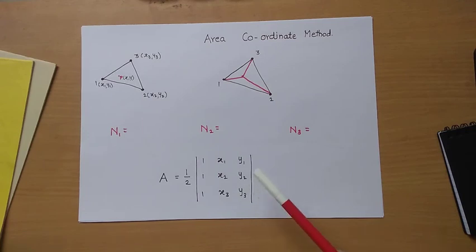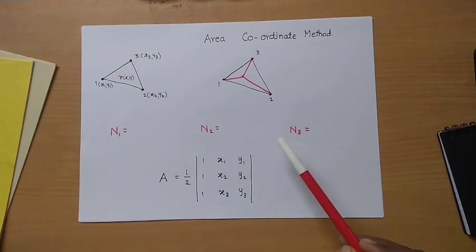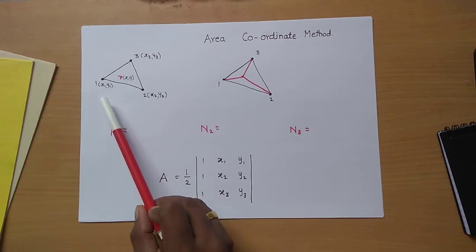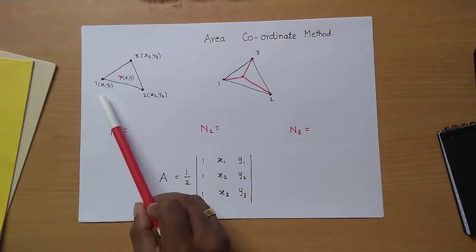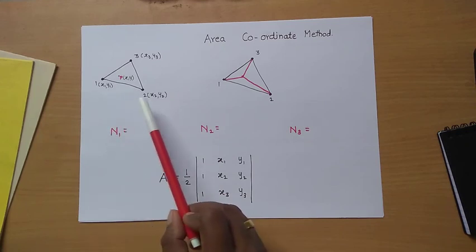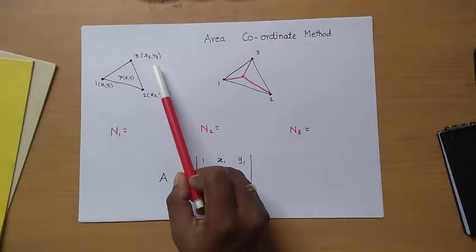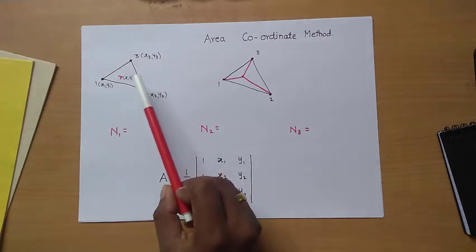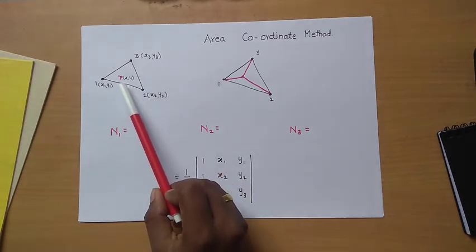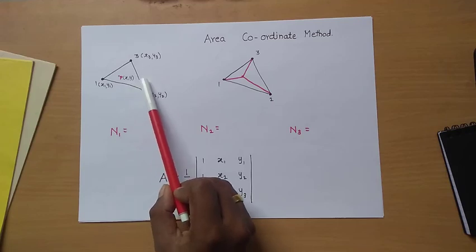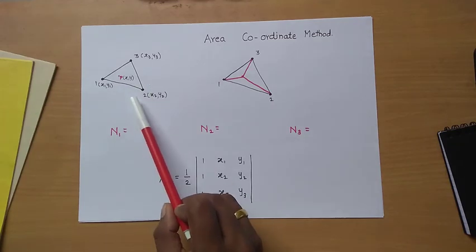Let's get to the area coordinate method. This is a triangular element having coordinates for each node: node 1 is (x1, y1), node 2 is (x2, y2), node 3 is (x3, y3), and there is one point denoted by coordinates (x, y) in the Cartesian coordinate system.